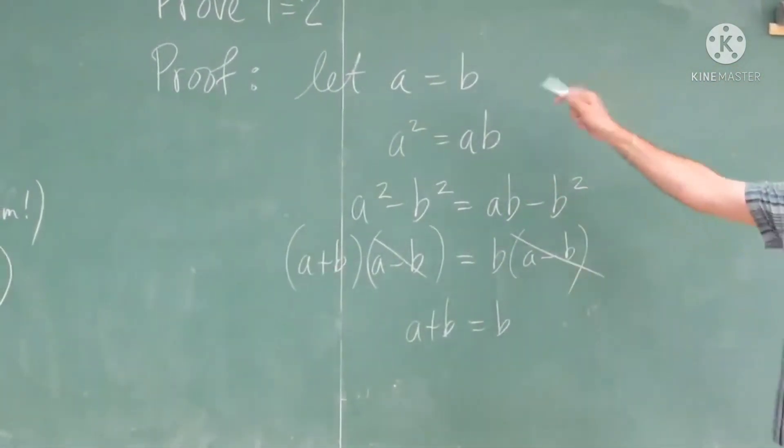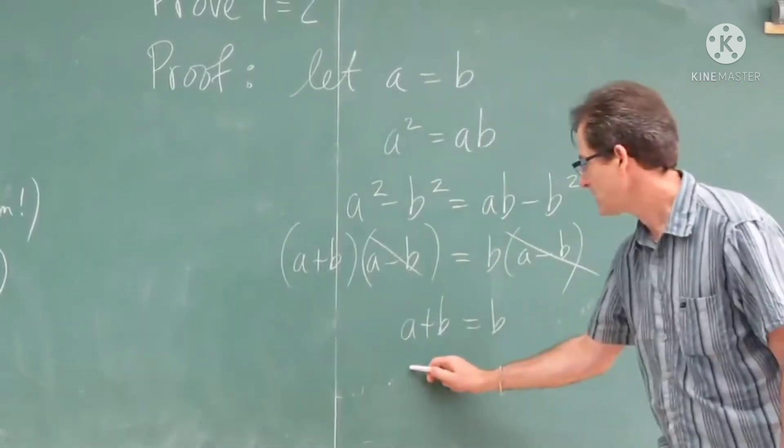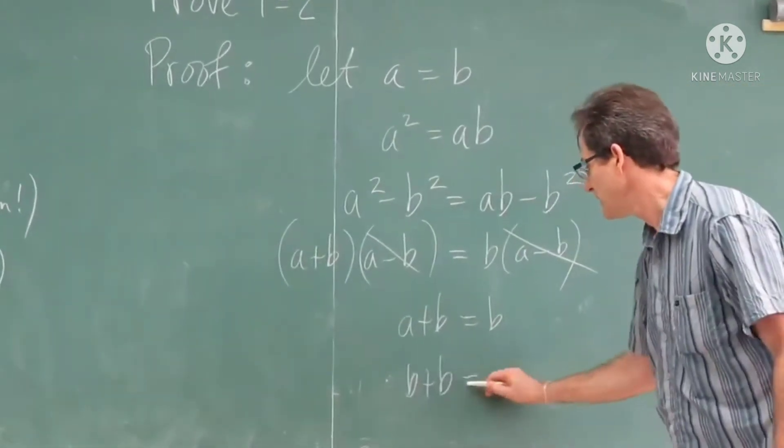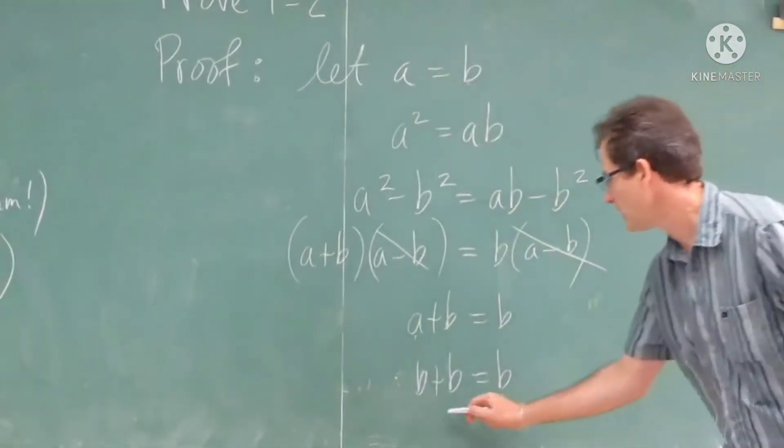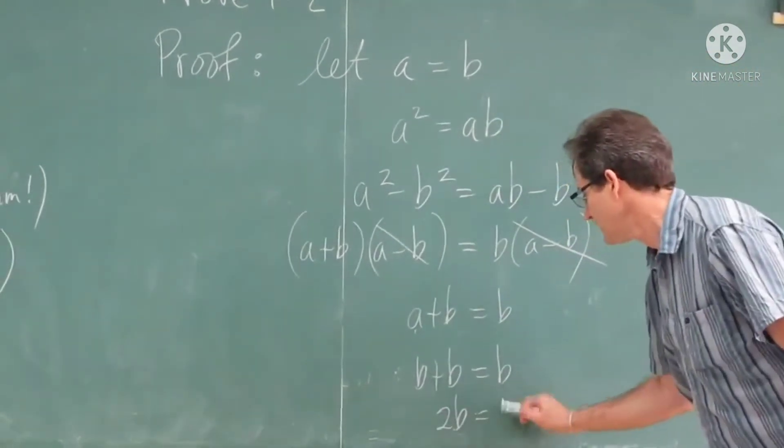But A is equal to B. So that's the same as B plus B equals B. Because A is equal to B. Or, 2B equals B.